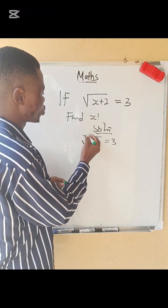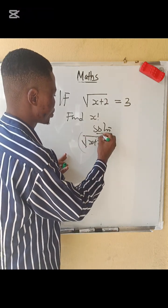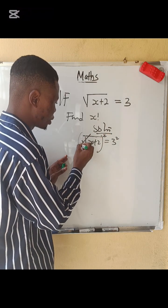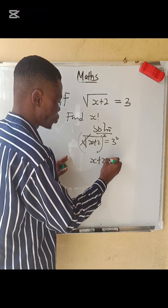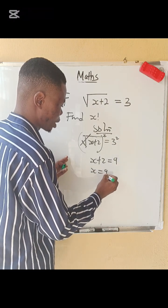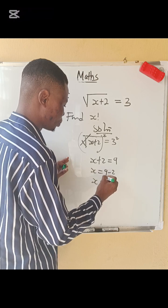What next should we do? We are going to remove the square root by squaring both sides. So when we square both sides, the square will eliminate and you now have x plus 2 equals 3 squared, which is 9. So x equals 9 minus 2, x equals 7.